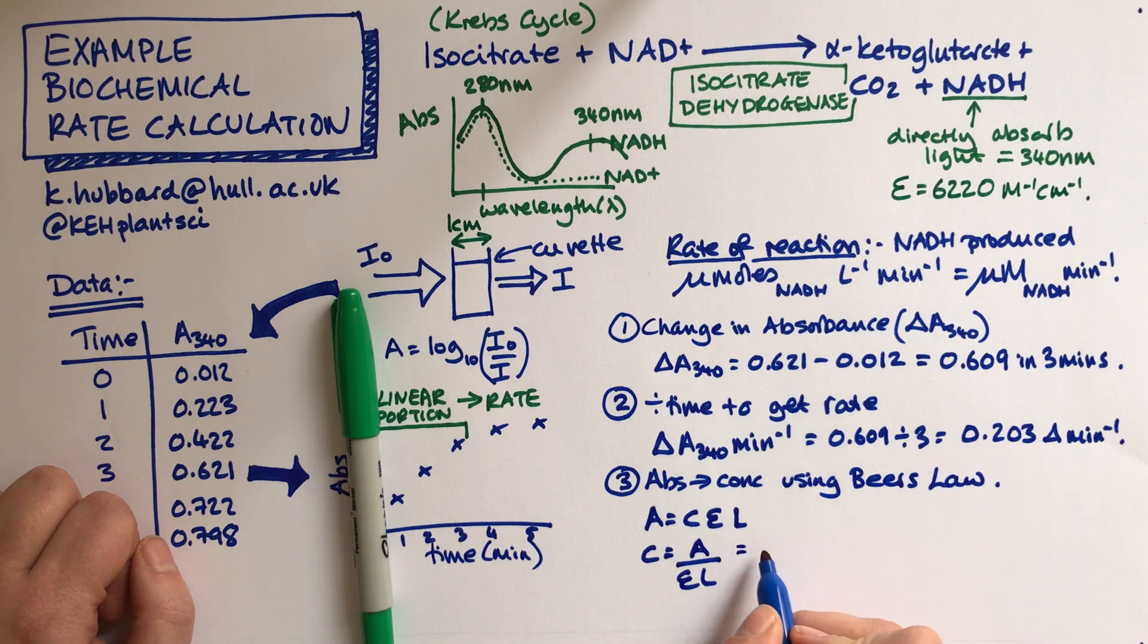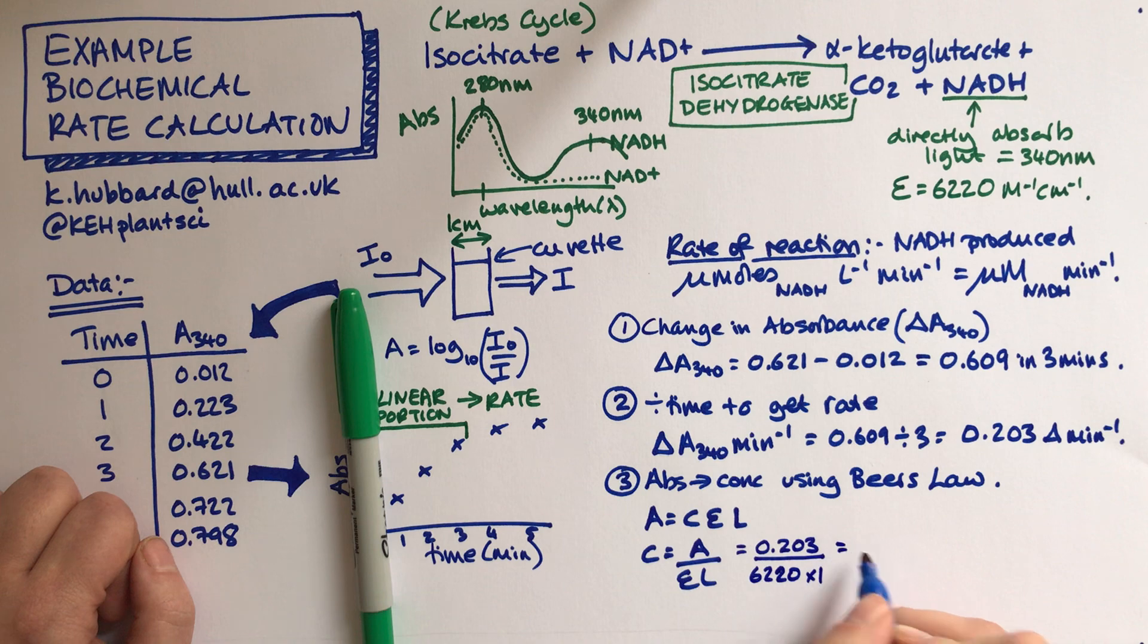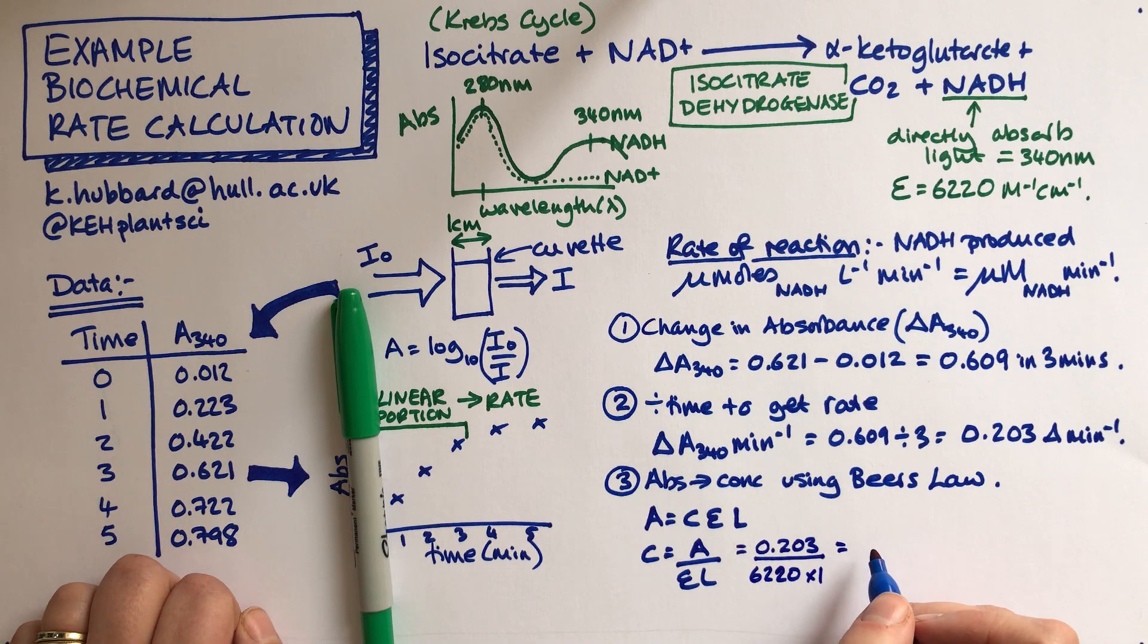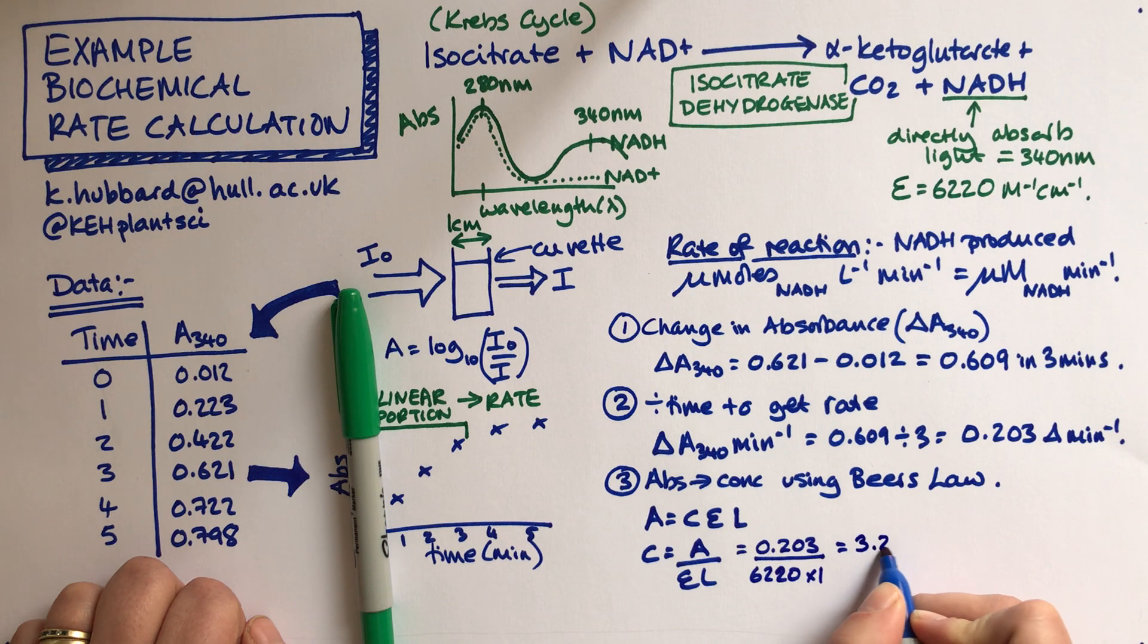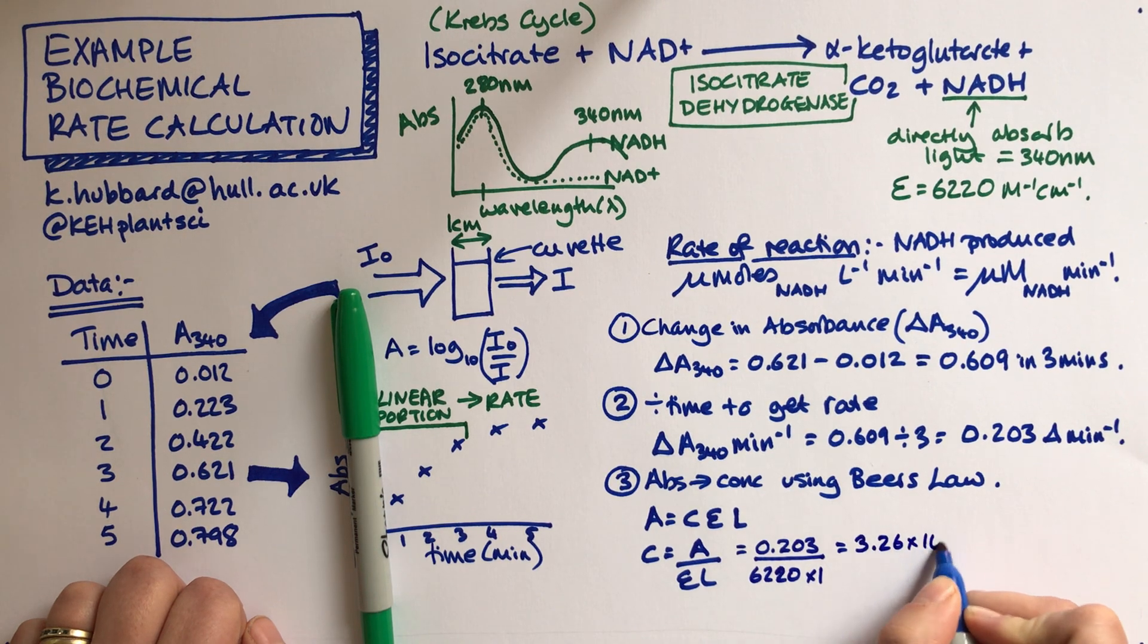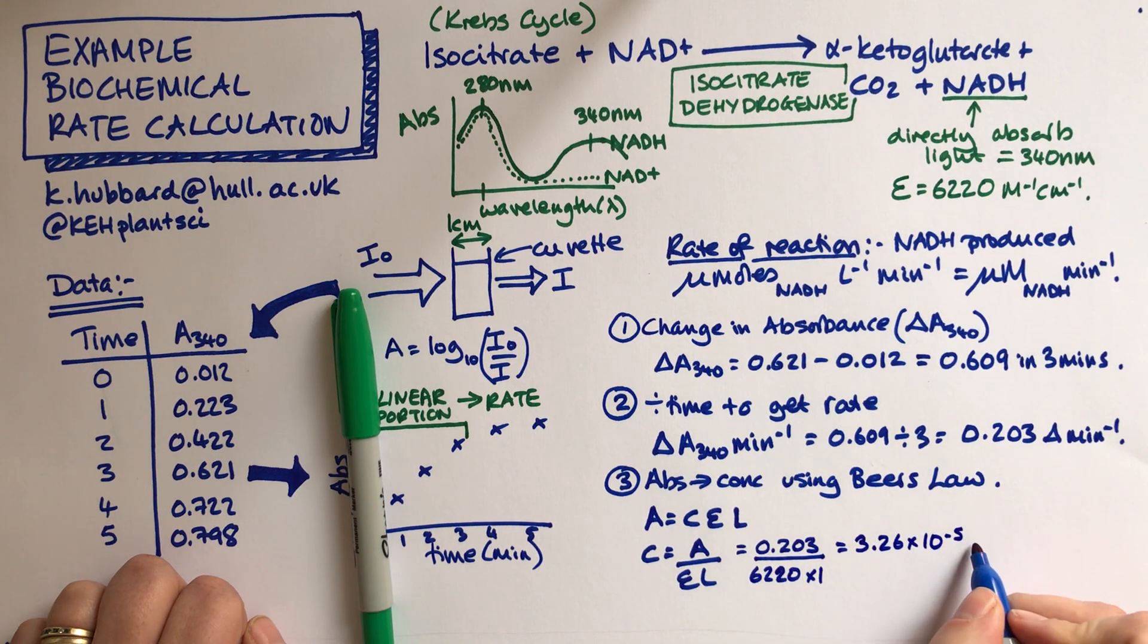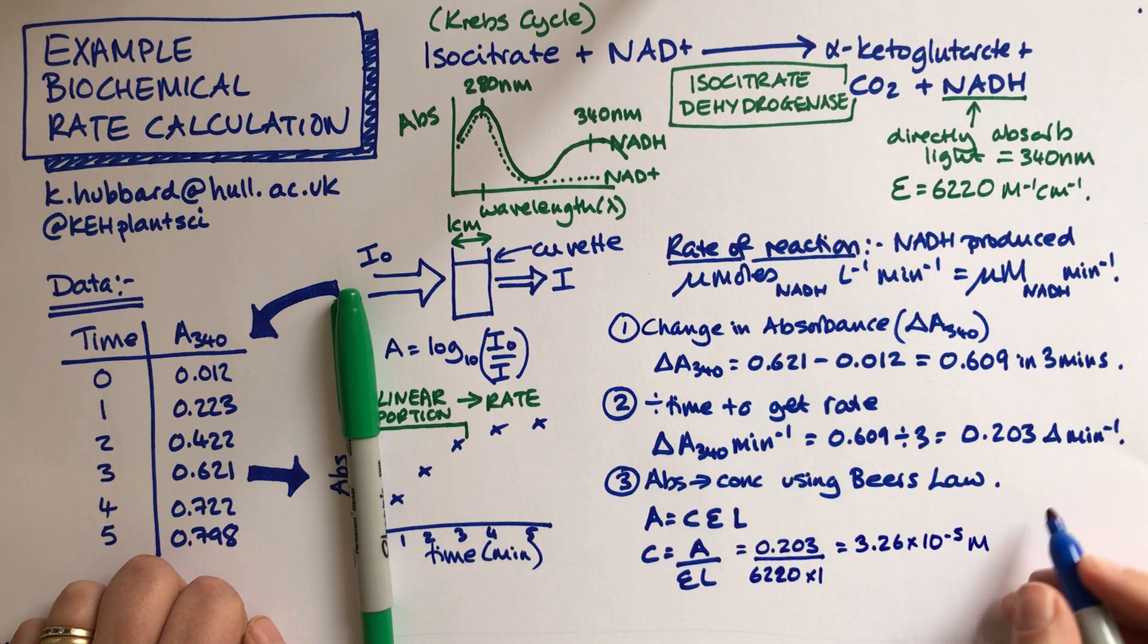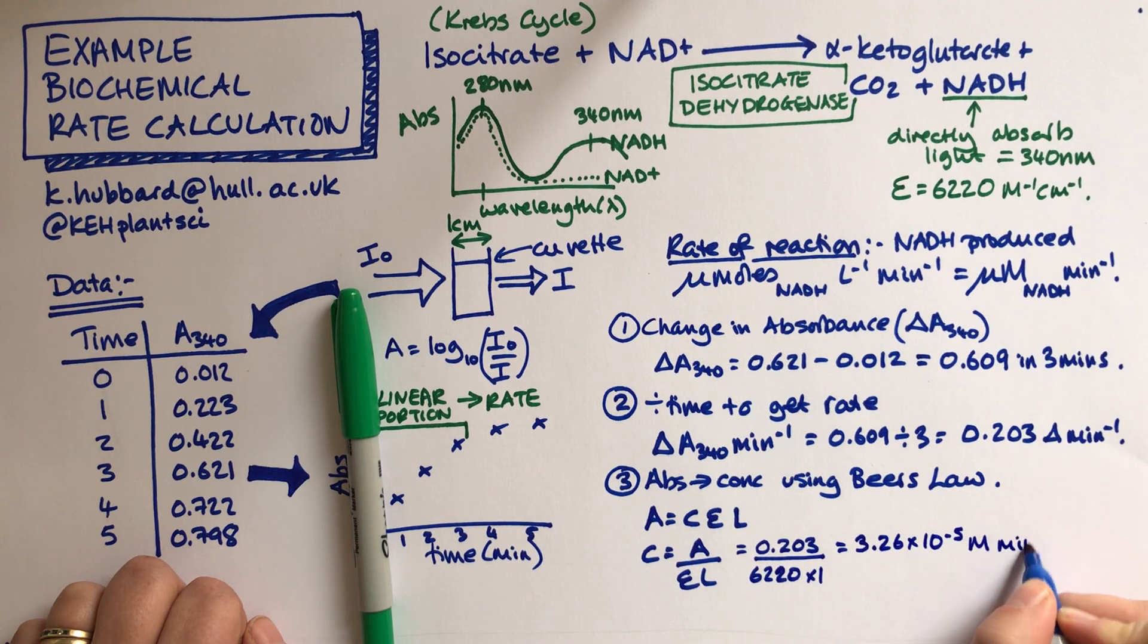So our absorbance was 0.203 divided by 6220 times by 1. And that gives us an answer of 3.26 times 10 to the minus 5 molar per minute.